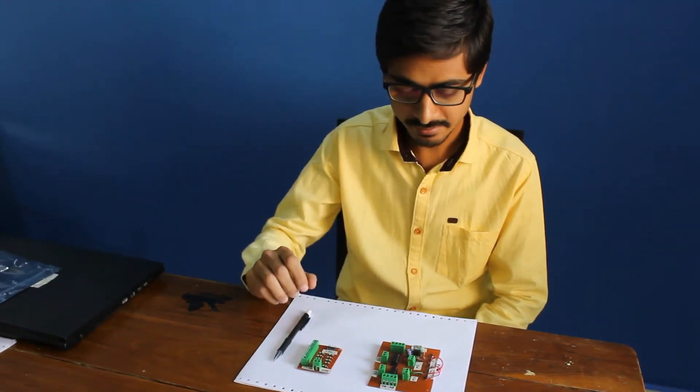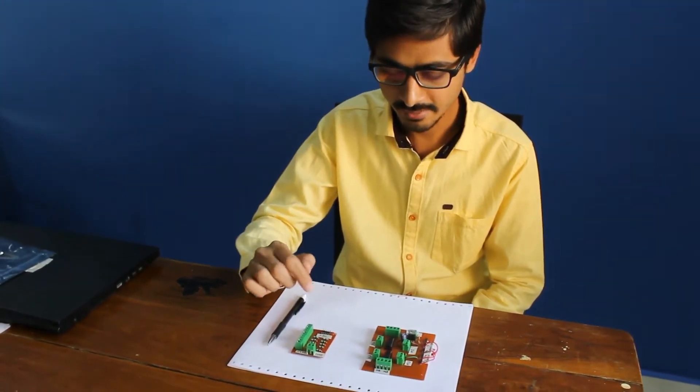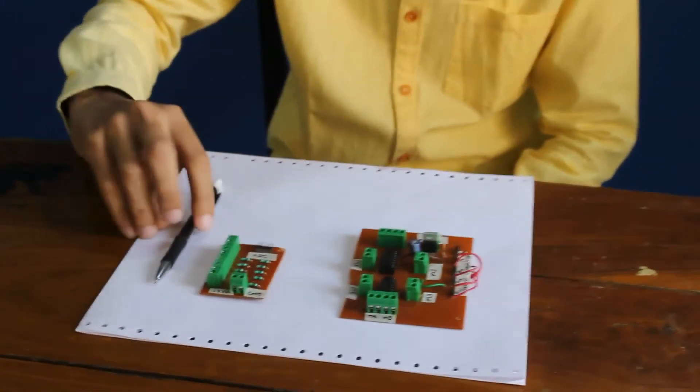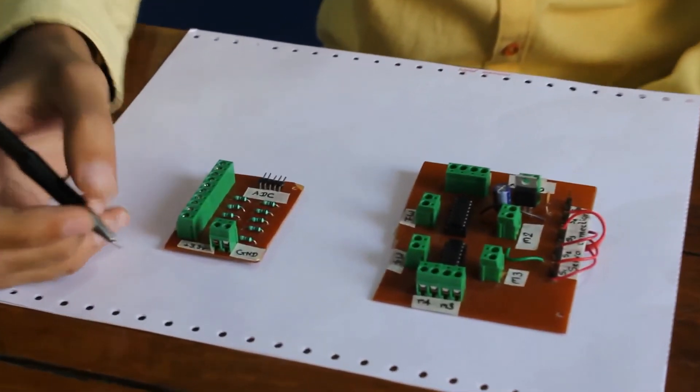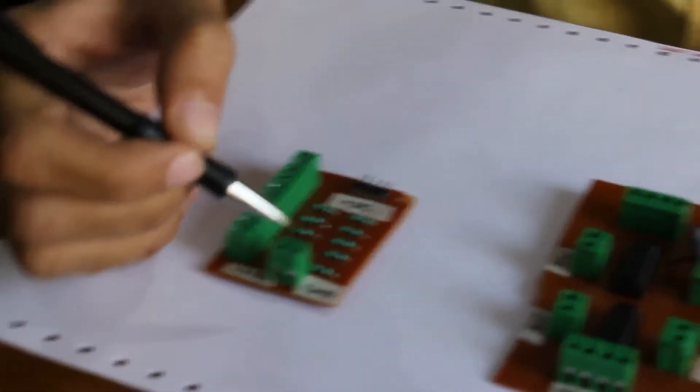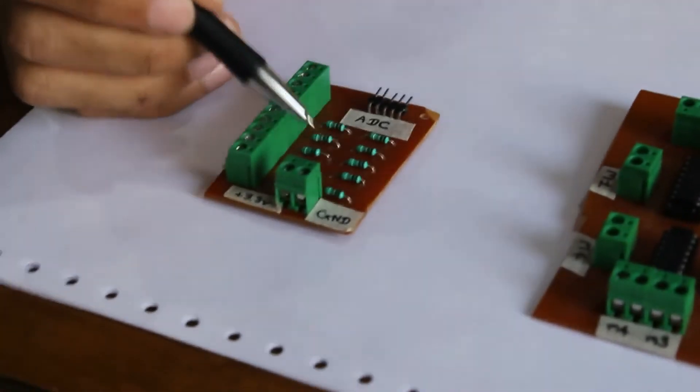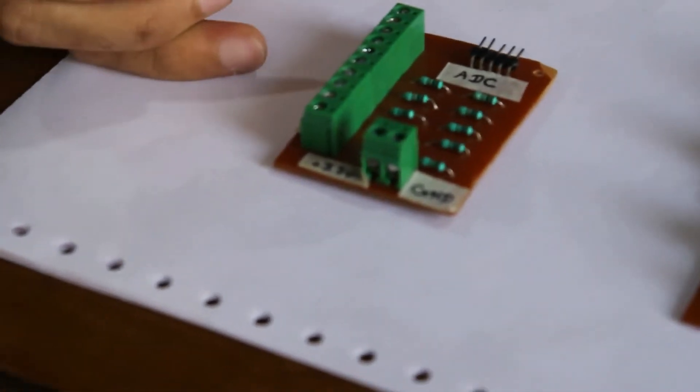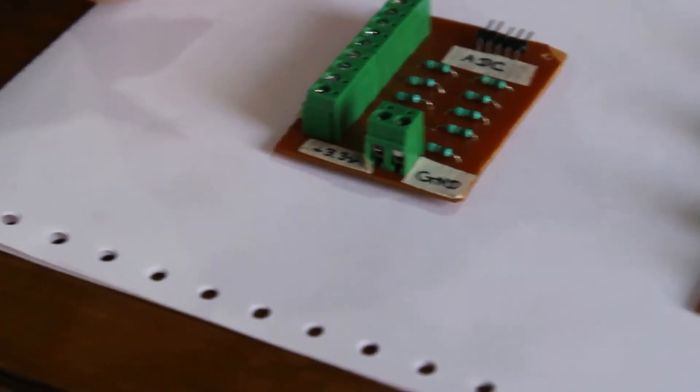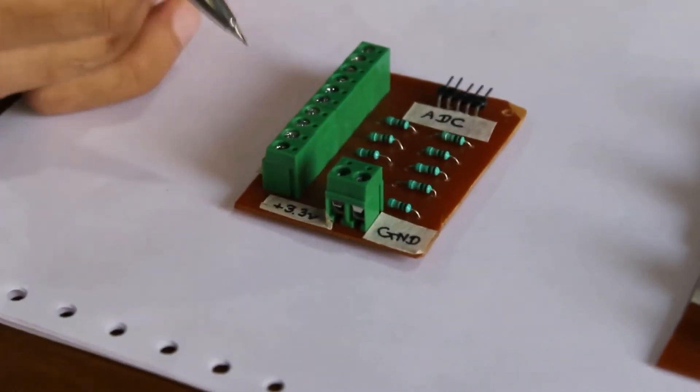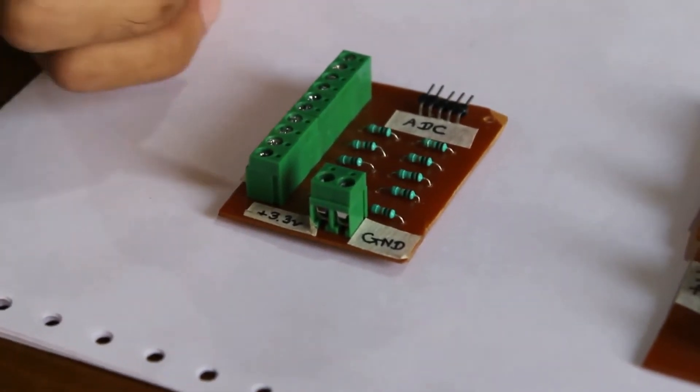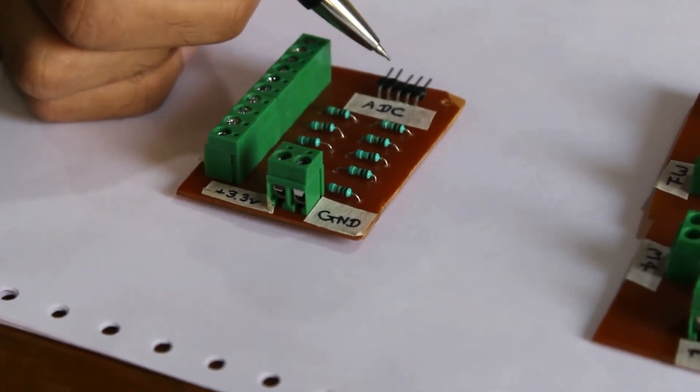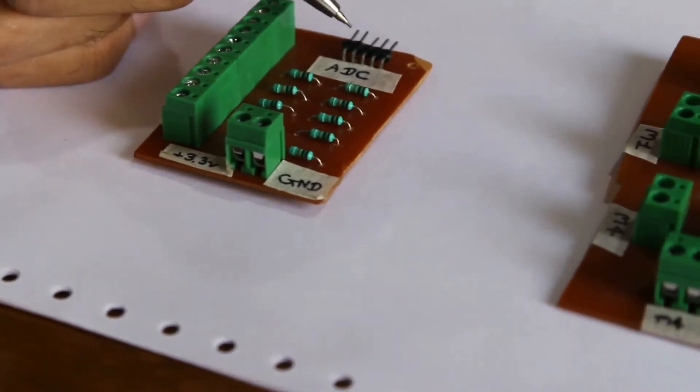These are the custom PCBs we made by etching method. This is the voltage divider PCB and this is motor driver and power supply PCB. Let me talk about the voltage divider PCB. This is 3.3V, this is ground. These are the 10K ohm resistors. 5 flex sensors are connected here. Microcontroller cannot detect the change in resistance, so we need to convert it into appropriate change in voltage. That's why we use this voltage divider circuit. The analog voltages are fed to microcontroller via ADC pins.